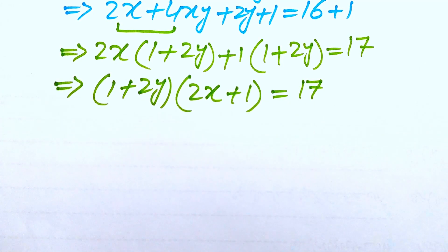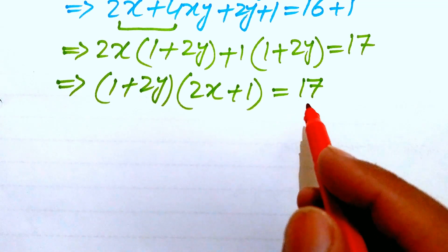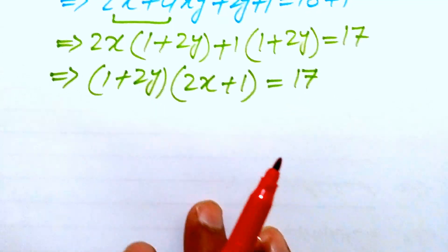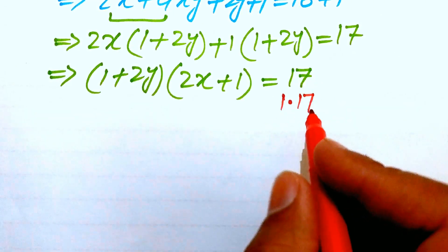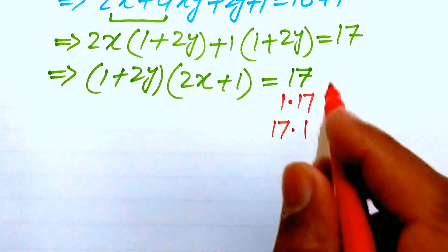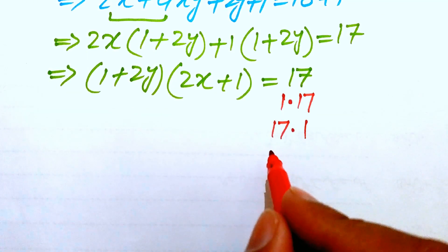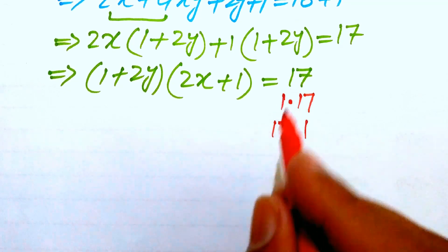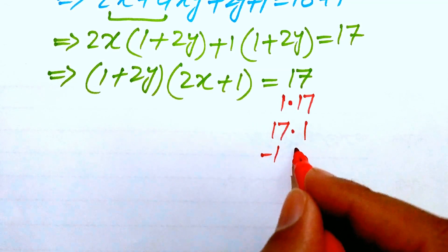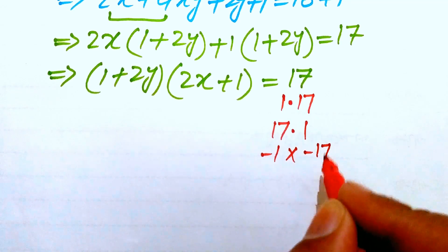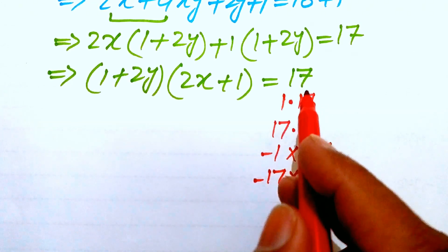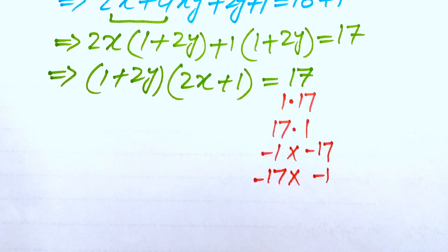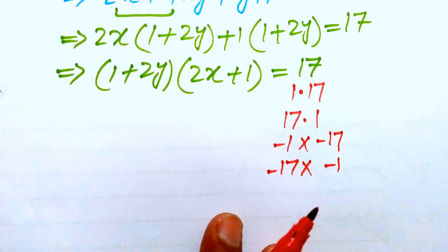We now find all possibilities where multiplying two integers gives 17. The four possibilities are: 1 times 17, 17 times 1, negative 1 times negative 17, and negative 17 times negative 1. So we have these four factor pair possibilities.